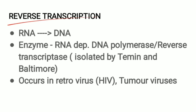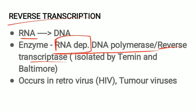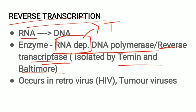Reverse transcription is the process where DNA is produced from RNA — the reverse of transcription. The enzyme involved is RNA-dependent DNA polymerase, also called reverse transcriptase. It is RNA-dependent because RNA acts as the template. Reverse transcriptase was first isolated by Temin and Baltimore. Reverse transcription occurs in retroviruses and also in tumor viruses.